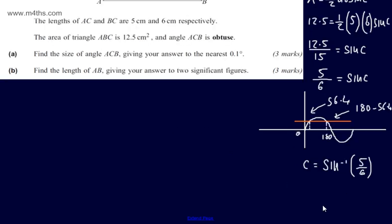So I'm going to write this here. So C is equal to 180 minus the 56.4 dot dot dot, and so on.